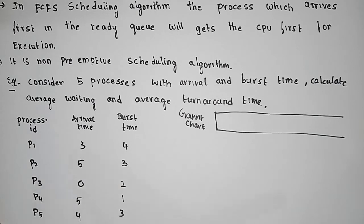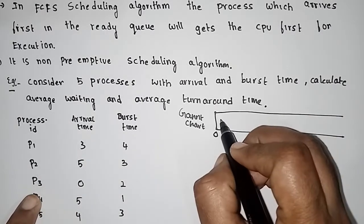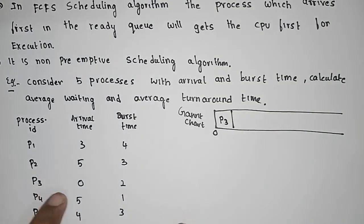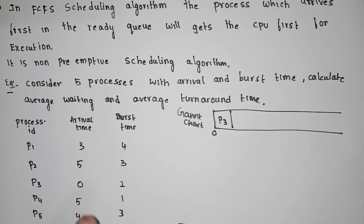We have completion time, turnaround time, and waiting time. When we create the Gantt chart, CPU process execution starts at 0. The arrival time at 0 is P3, so P3 gets the CPU first.